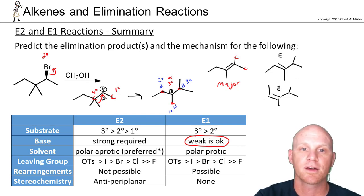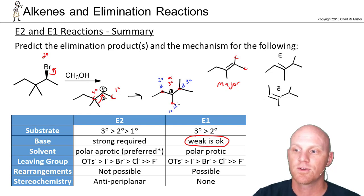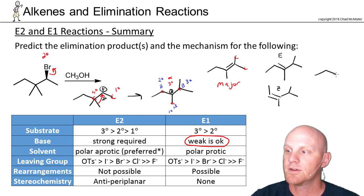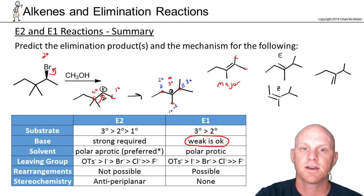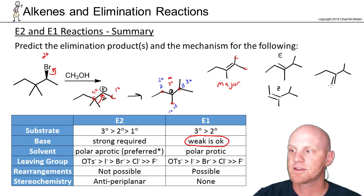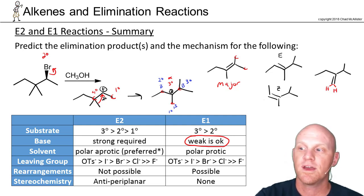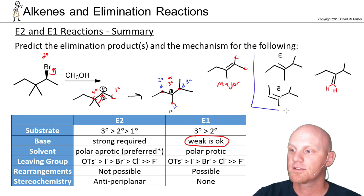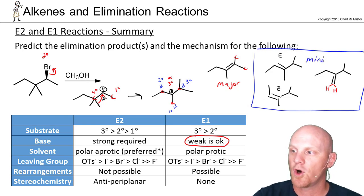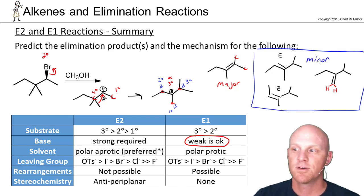Finally, using the primary beta carbon gives one more alkene. One side of that alkene's sp2 carbon is bonded to two identical hydrogens, so cis and trans are not possible. So in this case we get one major Zaitsev product and then these would all be considered Hofmann products and would all be minor products — four total products to predict for elimination.